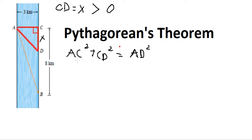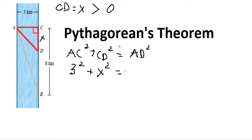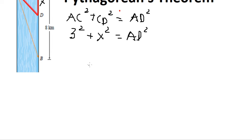AC equals 3, and CD equals S. So we have 9 plus S squared equals AD squared. Taking the square root of both sides, AD equals the square root of 9 plus S squared.